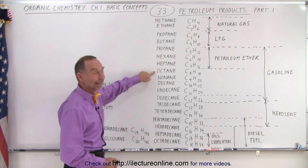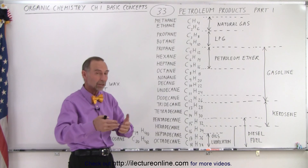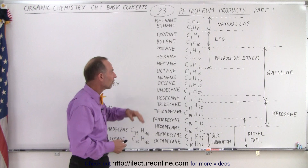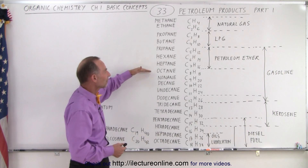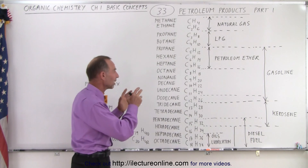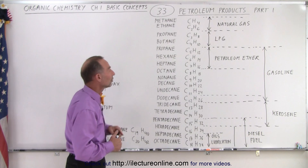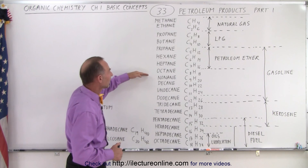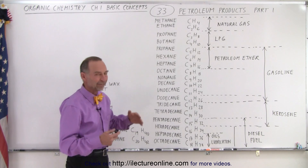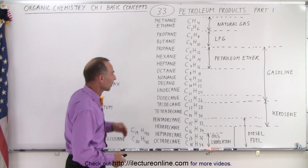You probably recognize octane — whenever you go to the gasoline pump you can choose between 87, 89, or 91 octane; some places go as low as 86 or 85. That number represents the percentage of octane in your gasoline. Generally speaking, the higher you go the more flammable it is, and the lower you go the less flammable, but gasoline tends to contain quite a few of these different compounds.